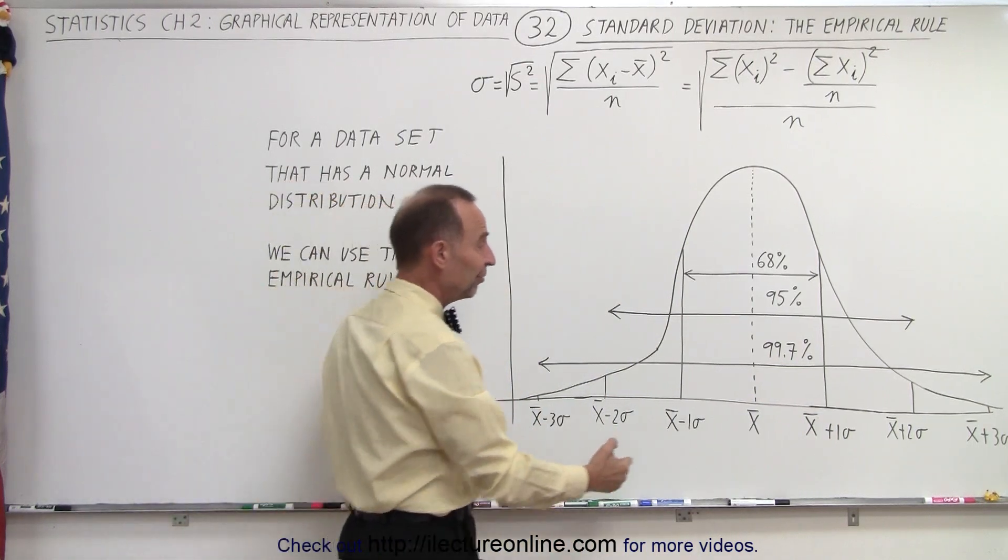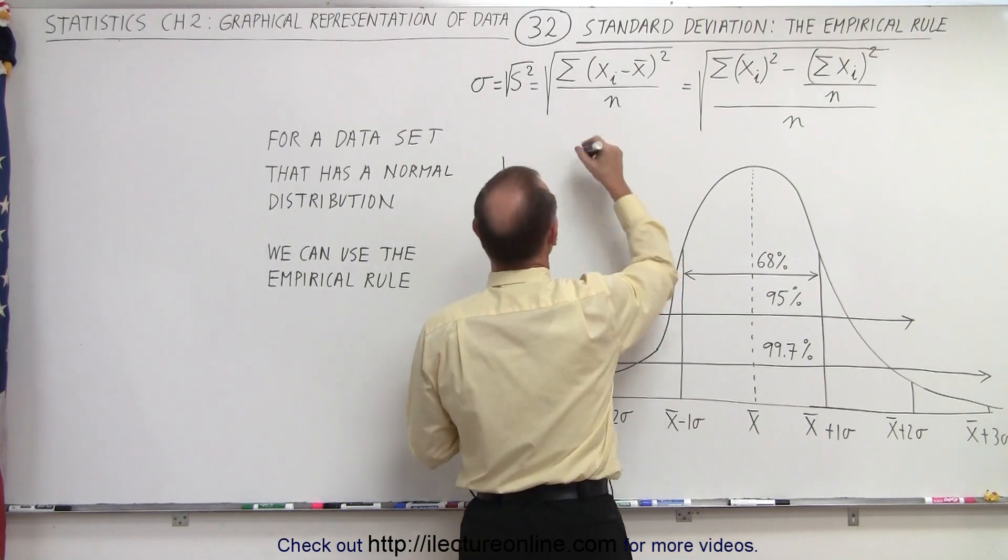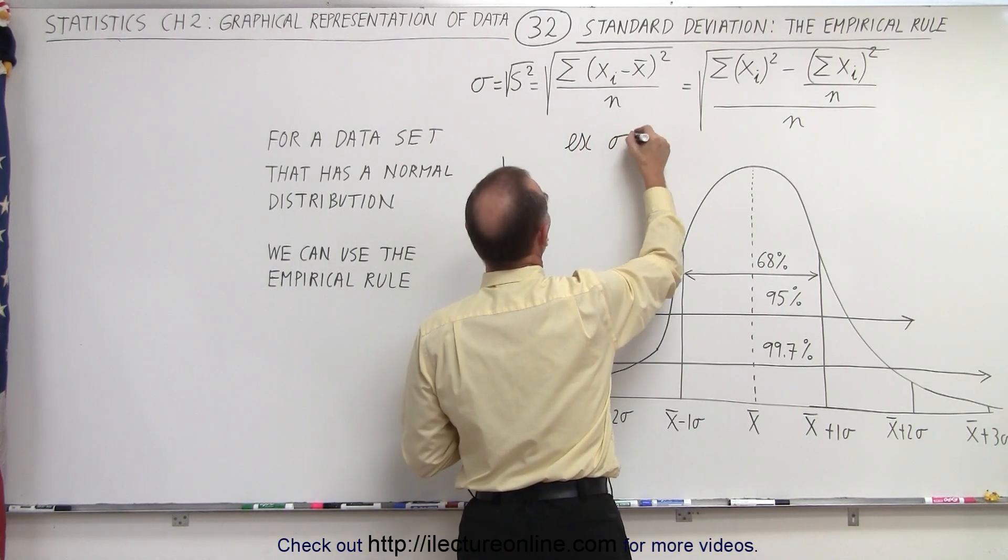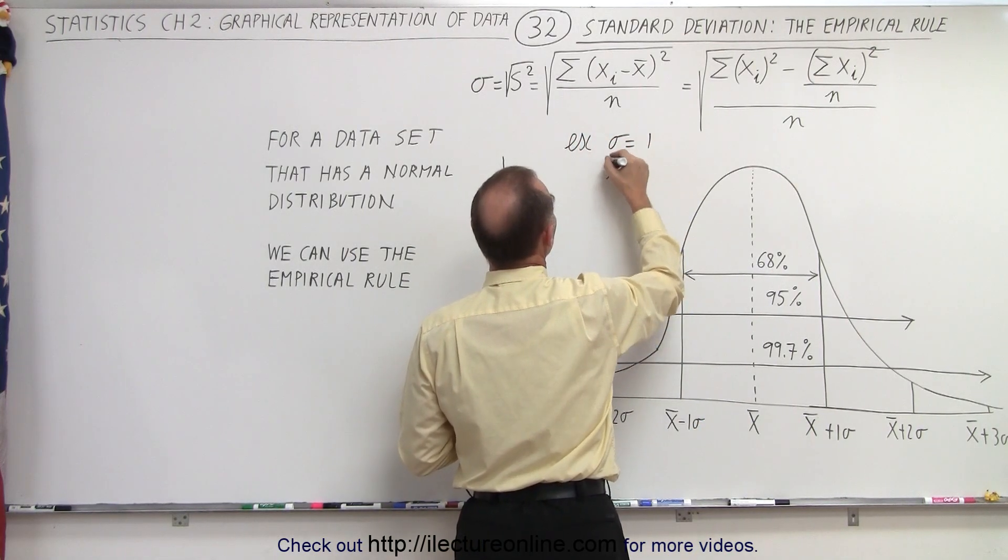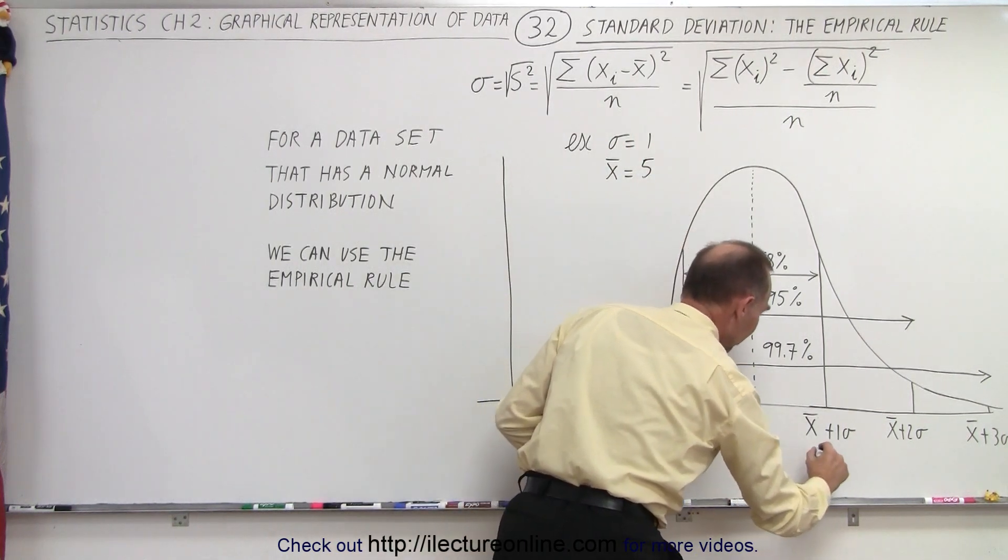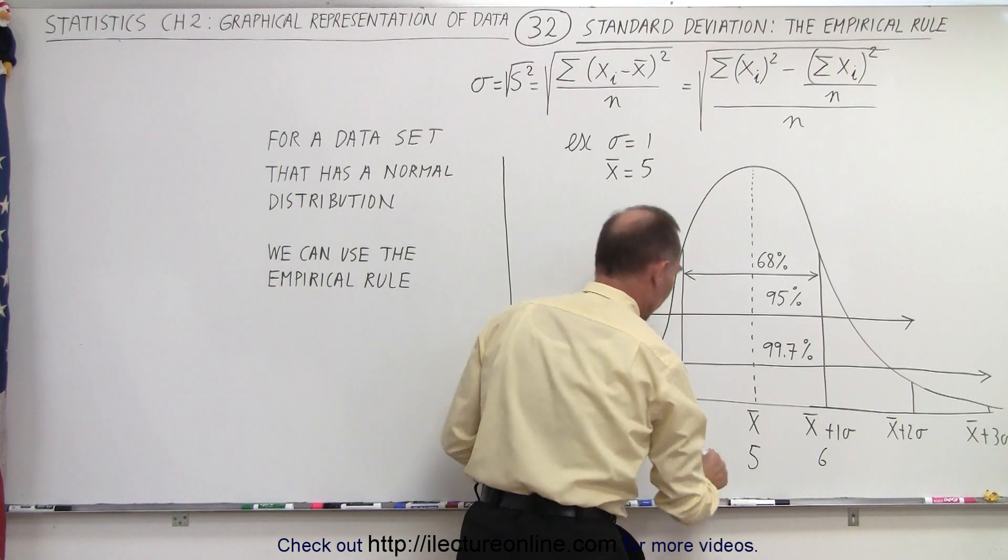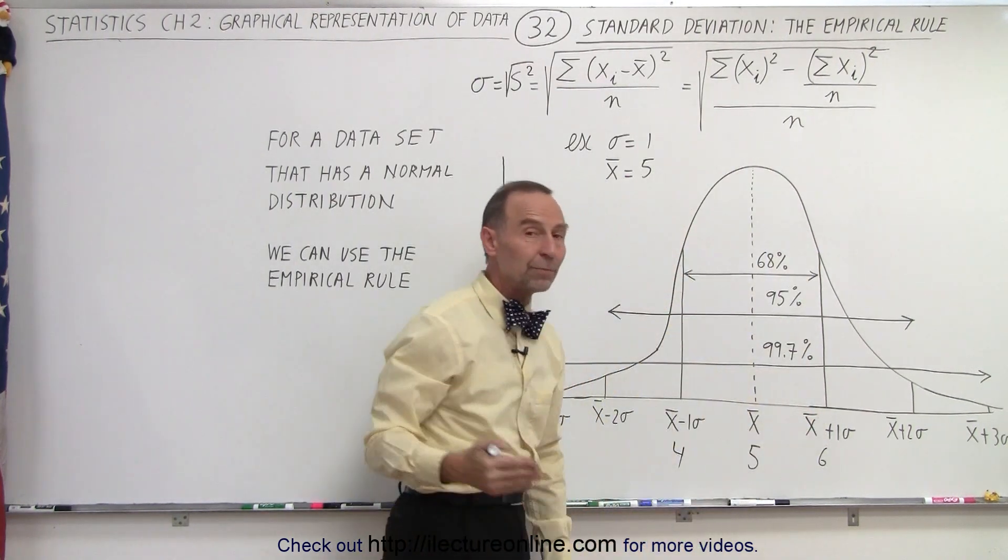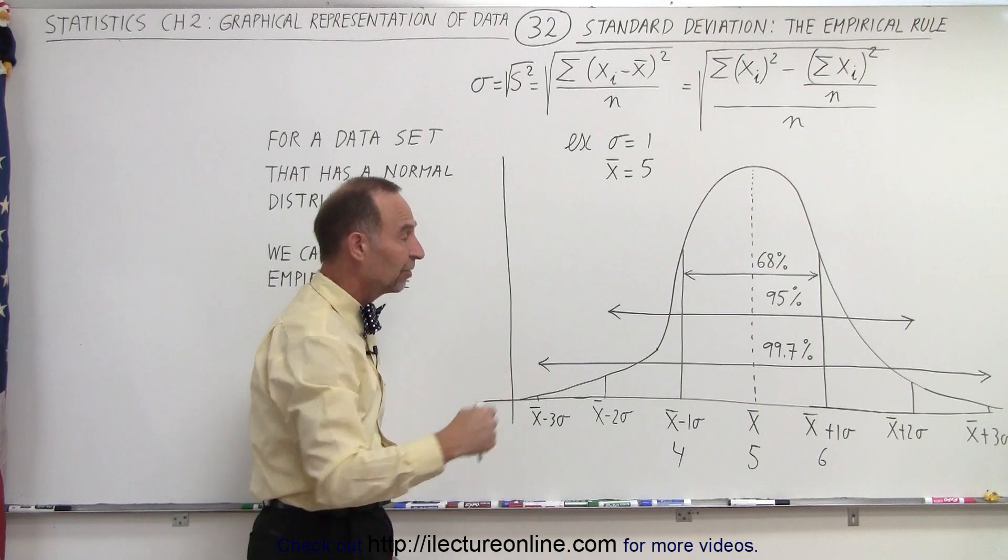So if this is five and the sigma is one, for example, if sigma equals one and the mean equals five, then that would be the average, this would be six, this would be four, and then you can see that 68% can be predicted to fall between four and six.